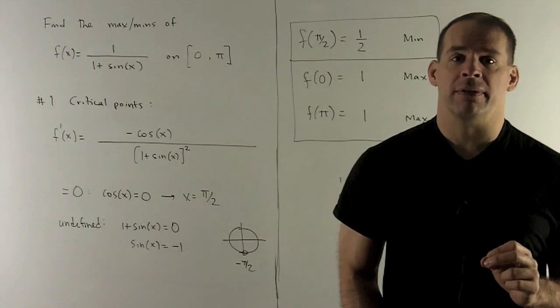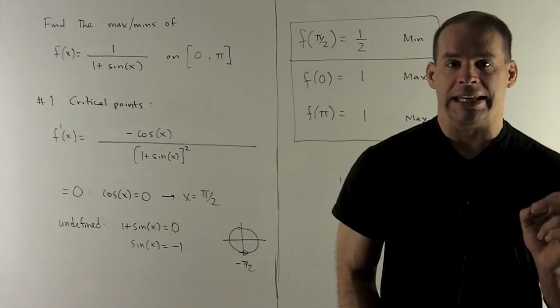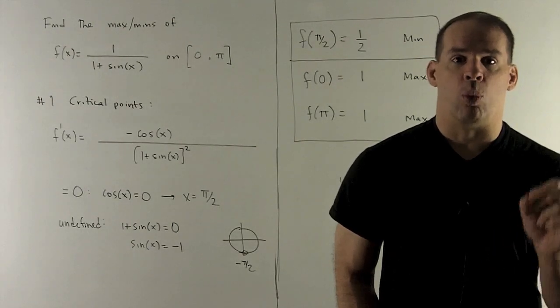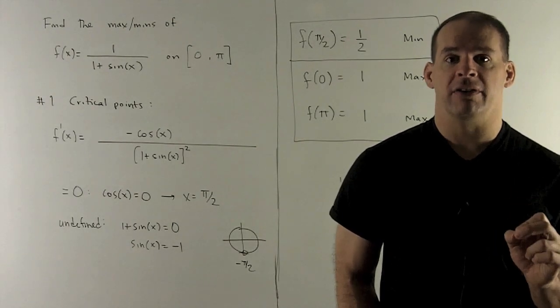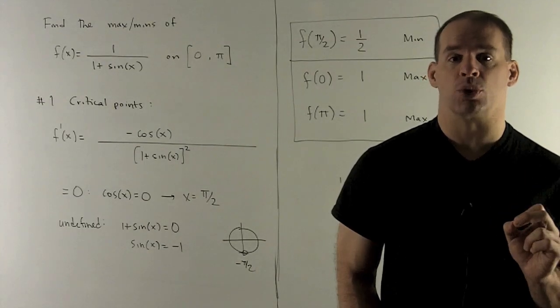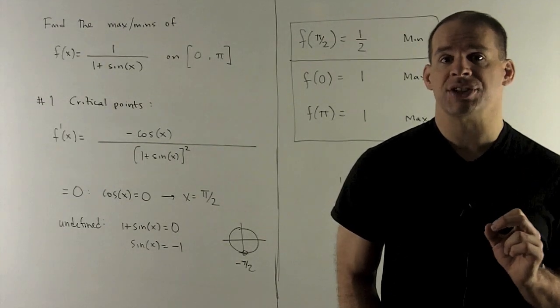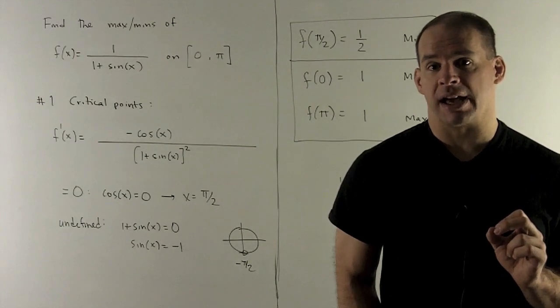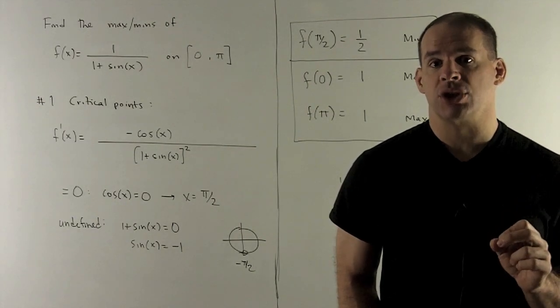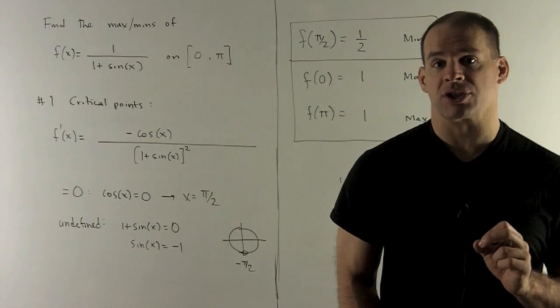If I take the derivative of our function f, we're going to need the special case of the quotient rule. That says if I have 1/g, the derivative is just -g'/(g²). In this case, the derivative of 1 + sin(x) is cos(x), so we're looking at -cos(x)/(1 + sin(x))².